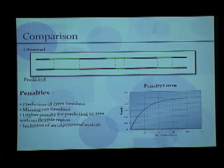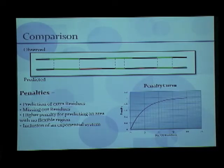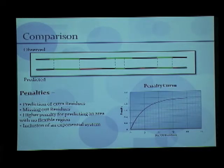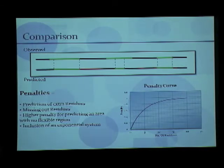The comparisons are done as follows: the observed flexibility and the predicted one are compared, and any overlap between the flexible areas is awarded. Any missing residues are penalized, and any extra residues that have been predicted also get a negative score. The penalty increases as the number of residues which are predicted extra or missed increases. There is a higher penalty for predicting an area with no flexible region or missing a flexible part, because we want to predict almost all of it — we'd rather predict more than lose out on a flexible region.